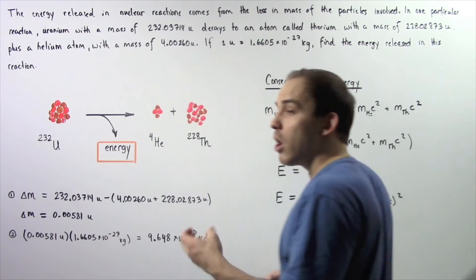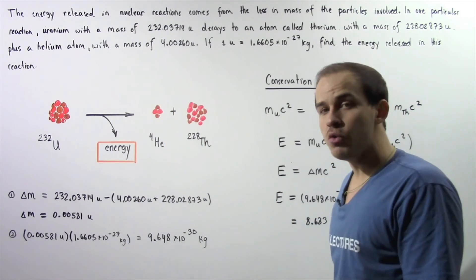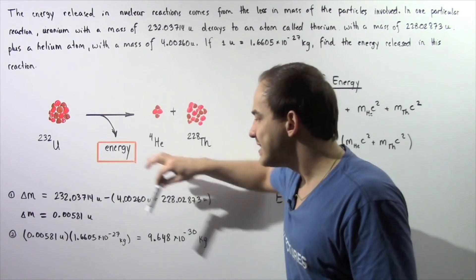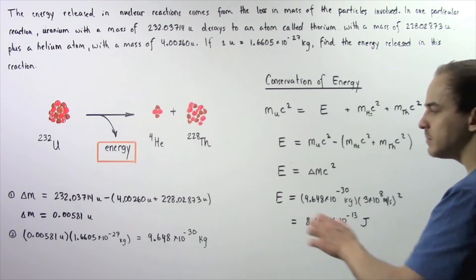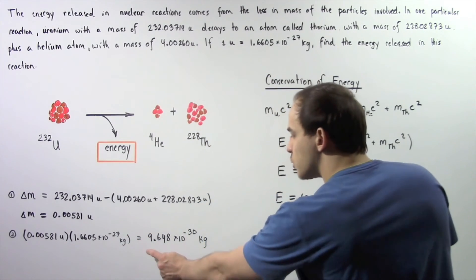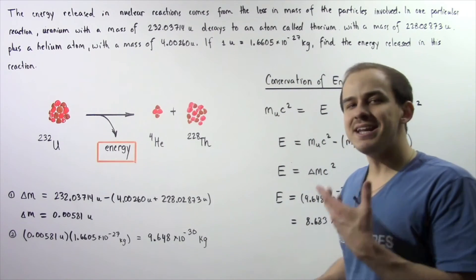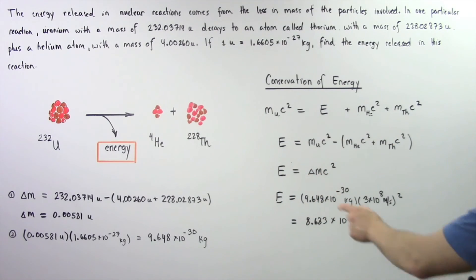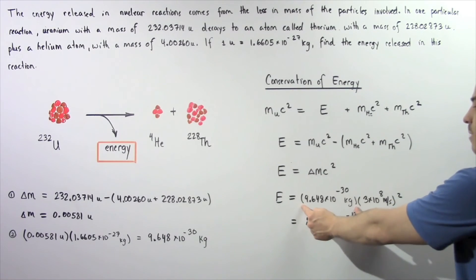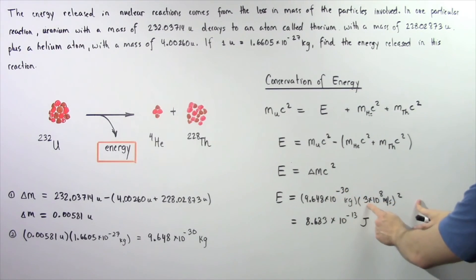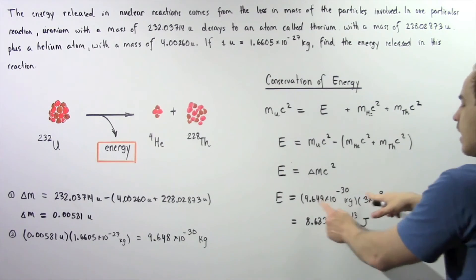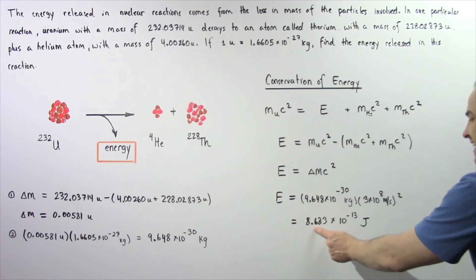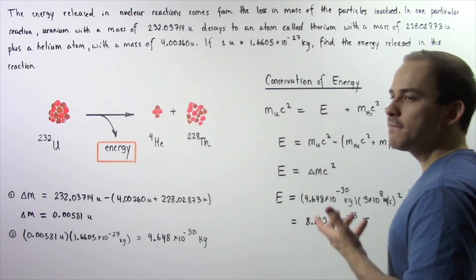In step two, we convert from unified atomic mass units to kilograms by multiplying by 1.6605 times 10 to the negative 27. The units cancel, leaving kilograms: 9.648 times 10 to the negative 30 kilograms. Going back to E = ΔmC², the change in mass in kilograms is multiplied by the speed of light in a vacuum, 3 times 10 to the eighth meters per second, squared. This gives us an energy of 8.683 times 10 to the negative 13 joules released from the transformation of mass into energy.